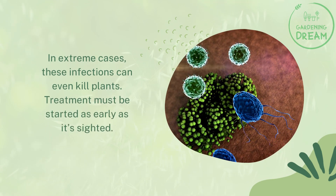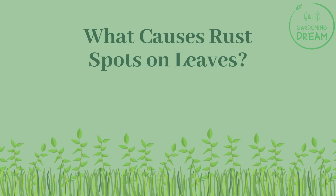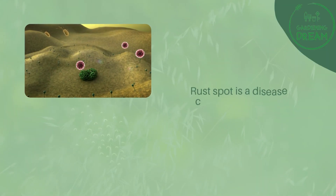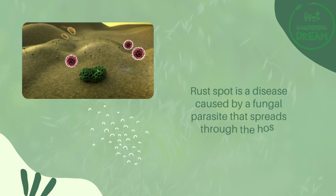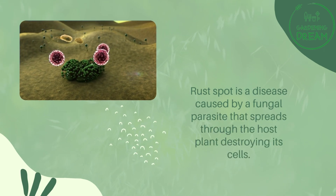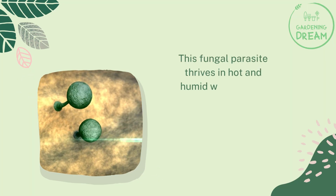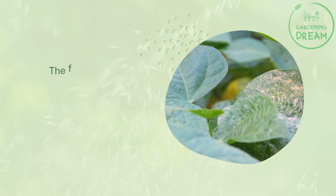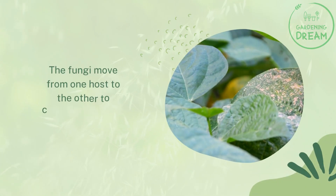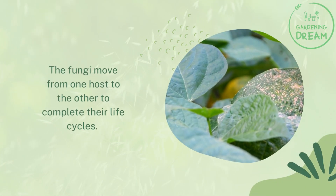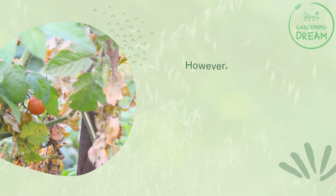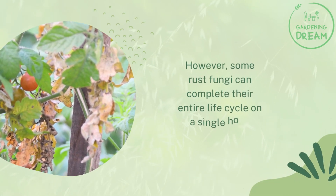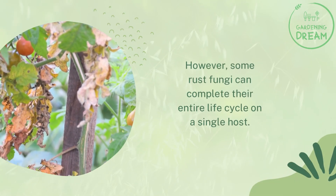Treatment must be started as early as it's cited. Rust spot is a disease caused by a fungal parasite that spreads through the host plant, destroying its cells. This fungal parasite thrives in hot and humid weather and can be tough to eliminate. The fungi move from one host to the other to complete their life cycles. However, some rust fungi can complete their entire life cycle on a single host.